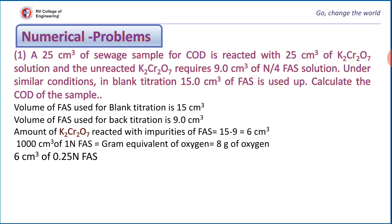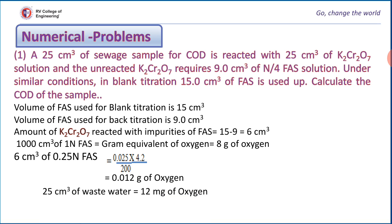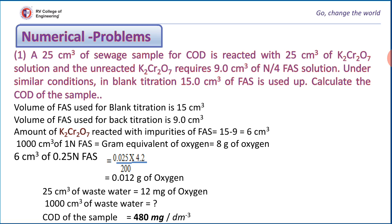Now we will solve a problem. 25 cm³ of a sewage sample is refluxed with 25 cm³ of potassium dichromate. The unreacted potassium dichromate requires 9.0 cm³ of N/4 FAS — this is the back titration value. Under similar conditions, the blank titration consumes 15.0 cm³ of FAS. We have to calculate the COD. The blank titration value is 15.0 cm³ and back titration value is 9.0 cm³. Their difference gives the amount of potassium dichromate reacted with the impurities. By applying the law of chemical equivalence, the final answer comes out to be 480 mg per dm³.